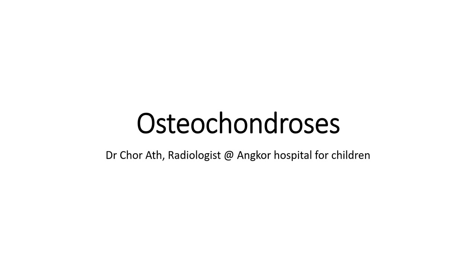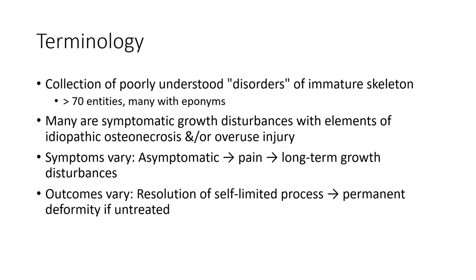Hello everyone, today I am going to show you about osteochondrosis. The terminology covers a collection of poorly understood disorders of the major skeleton, more than 70 entities, mainly with apophyseal involvement. Many are symptomatic growth disturbances with elements of idiopathic osteonecrosis and overuse injury.